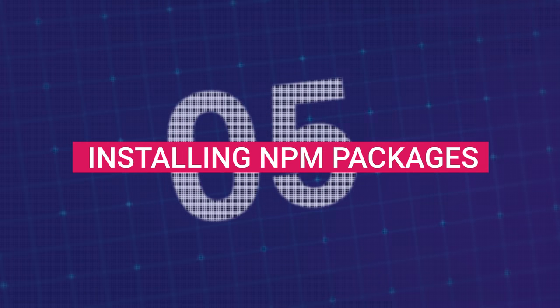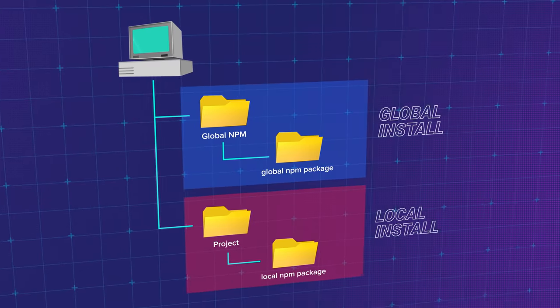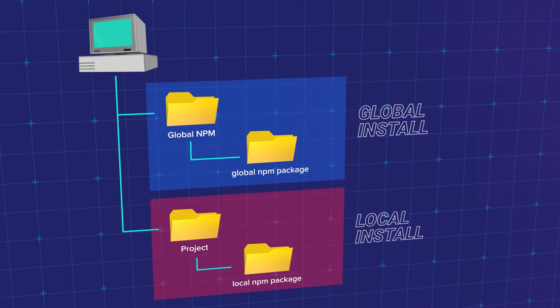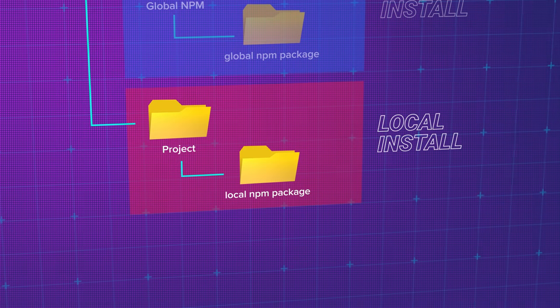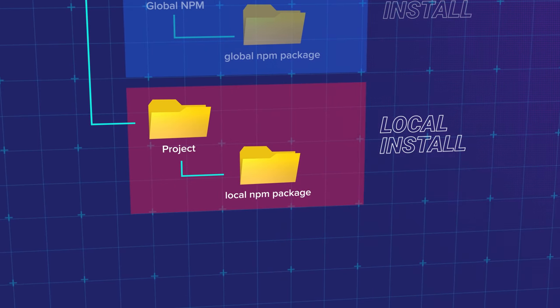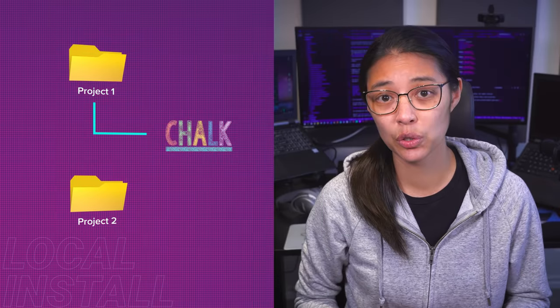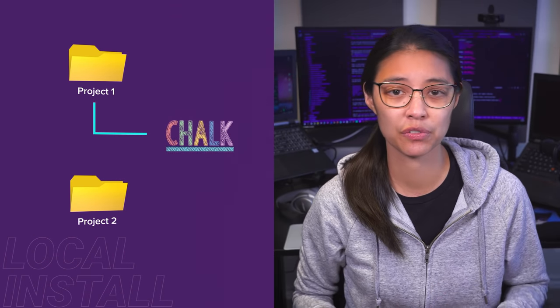Now that we have Node and NPM installed, how do you go about actually installing NPM packages? First, there are two ways of installing packages, locally and globally. Generally, you'll want to install packages locally in the project folder that you want to use the package for. This ensures that when you deploy your project, it'll include all the necessary packages. Installing a package locally means that it'll only be accessible from that specific project folder.